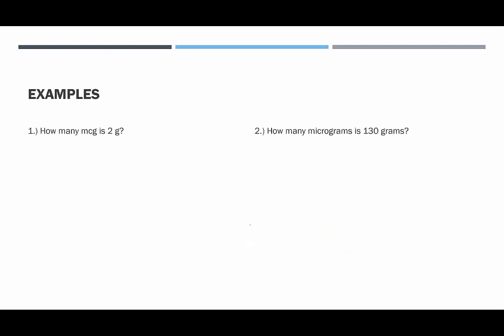Let's look at some examples. In our first example, we want to know how many micrograms is two grams. To convert from grams into micrograms, we take the two and multiply it by one million. What's two times a million? Well, that would be two million — so that would be two million micrograms. Just make sure you get all those zeros.